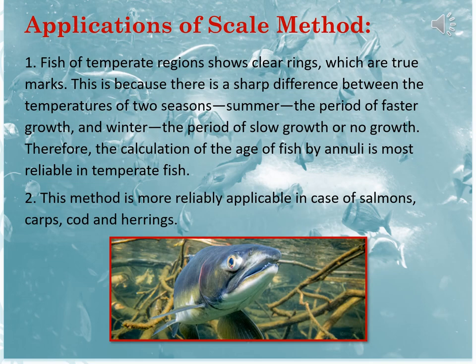Application of the scale method is very much useful for temperate regions. In those regions, the scales of fishes show clear rings that are the true marks for the age. This is because there is a sharp difference between the temperatures of two seasons — summer, the period of faster growth, and winter, the period of slow growth or no growth at all. Therefore, calculation of the age of fish by annulus is most reliable in temperate fish.